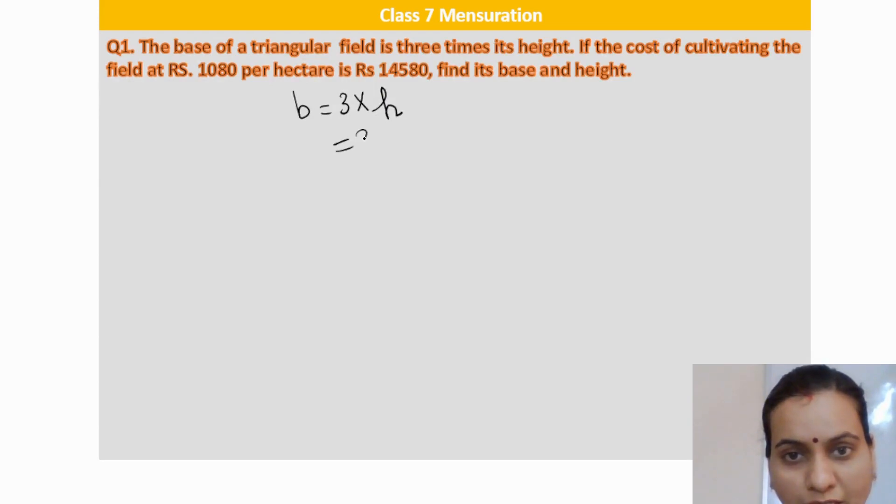So if height is h, then the base of the triangular field is 3 into h. So b is equal to 3 times its height which is h. If the cost of cultivating the field at rupees 1080 per hectare is rupees 14,580, find its base and height.